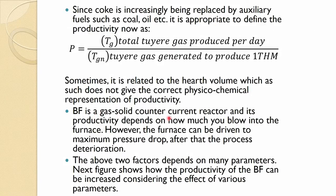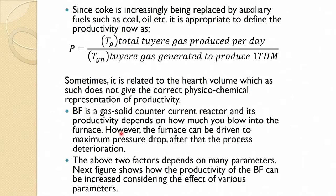The blast furnace is a gas-solid counter-current reactor and its productivity depends on how much blast you blow into it. However, the furnace can be driven to a maximum pressure drop, and above that the process deteriorates — there is a maximum pressure drop across the whole furnace, and if exceeded, productivity will decrease.